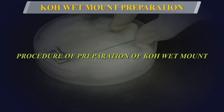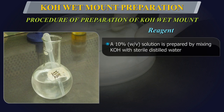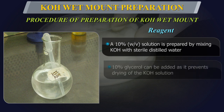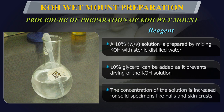Procedure of preparation of Potassium Hydroxide Wet Mount. Reagent: A 10% weight by volume solution is prepared by mixing potassium hydroxide with sterile distilled water. 10% glycerol can be added as it prevents drying of the potassium hydroxide solution. Usually, a 10% solution is adequate to dissolve thin hair and scales. The concentration may be increased as certain solid specimens, like nails and skin crusts, may require 10-40% concentration.